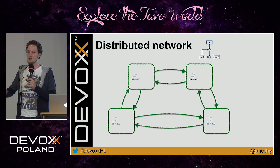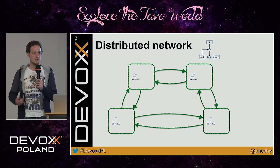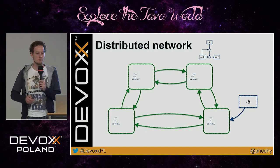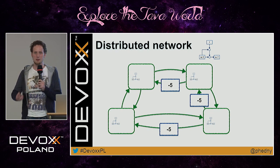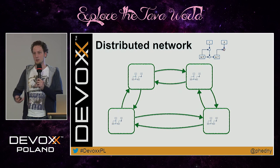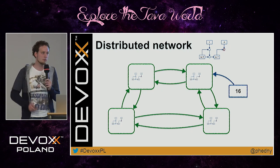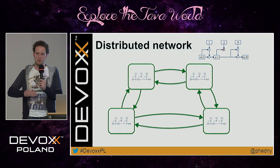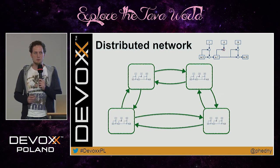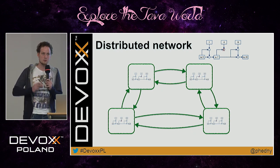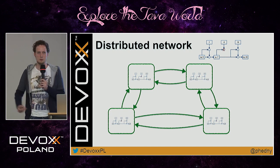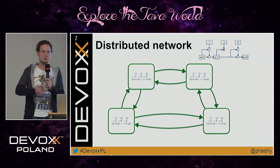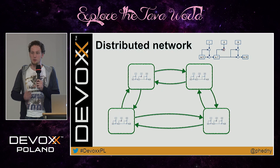Every node runs its own identical state machine. When a message of minus 5 is inserted into a node, it's distributed across the network and each node independently runs the validation function and sees it is not valid. When 16 comes in at a different node, it's forwarded across the network and every node independently sees 16 is valid and progresses to the next state. You only need to trust your own node — if others break the rules, they end up in a different state.